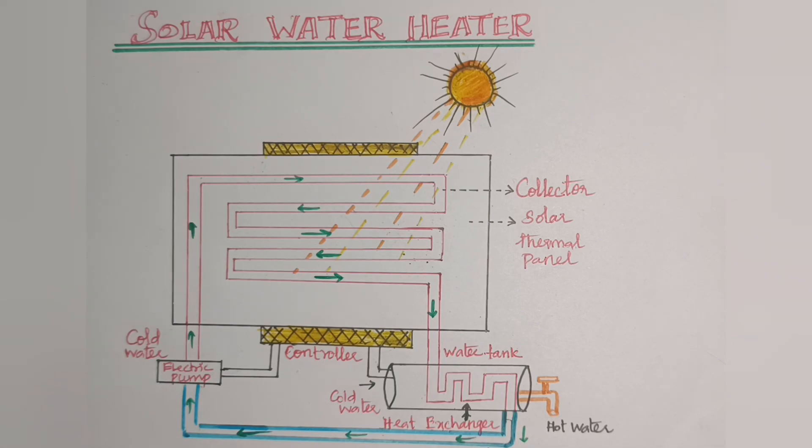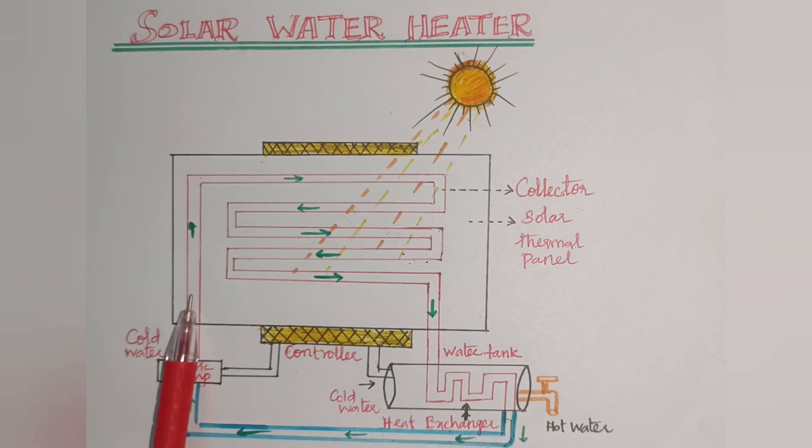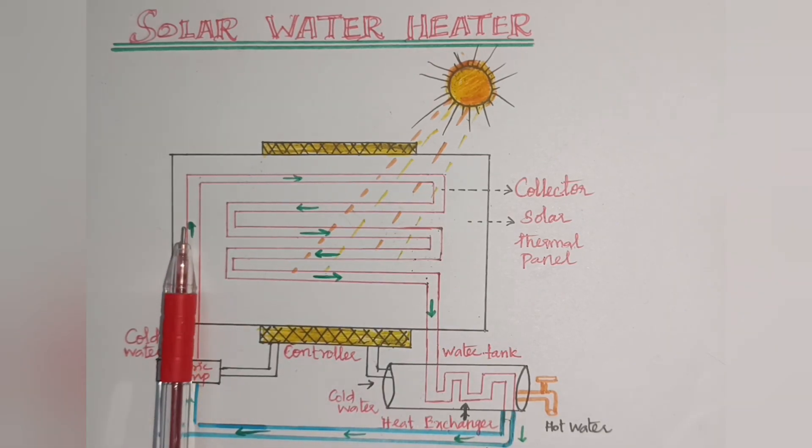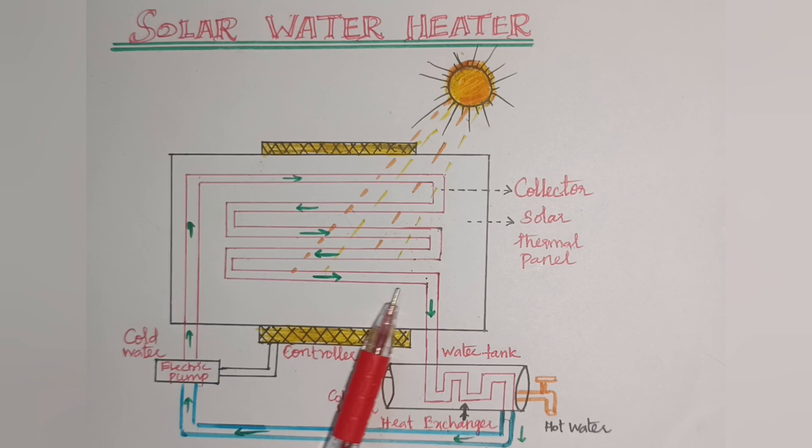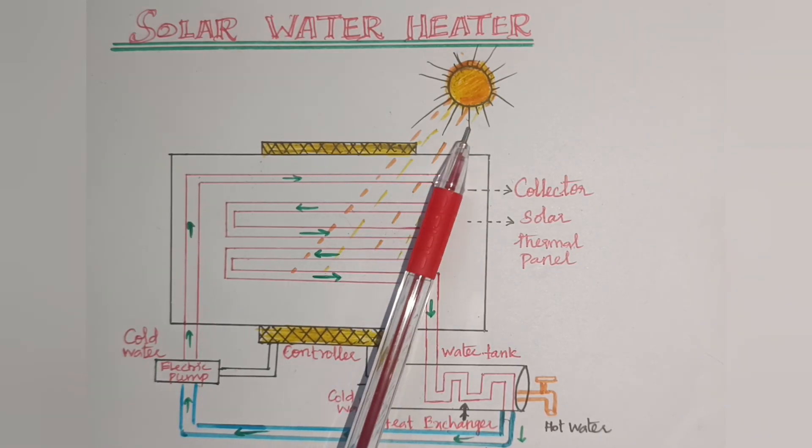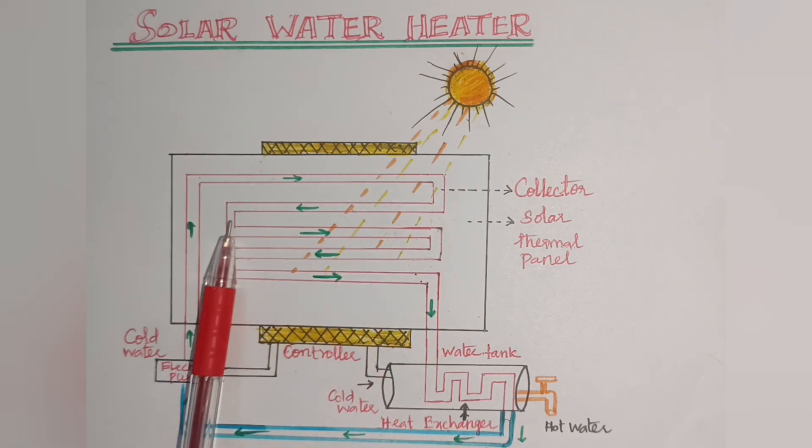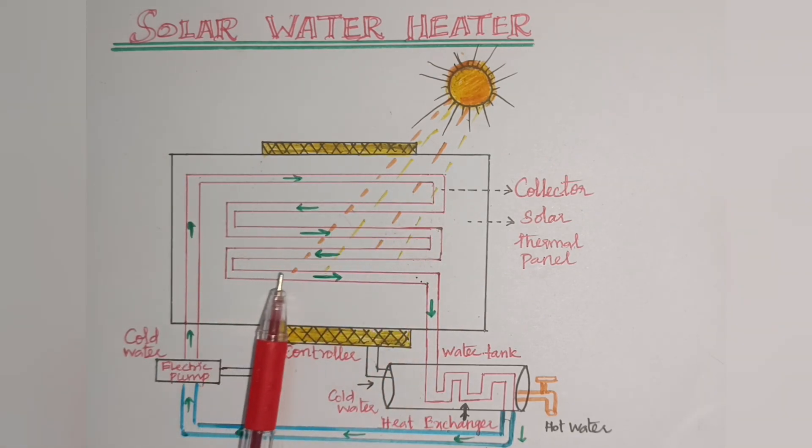Initially, with the help of electric pump, cold water is pumped into the collector rod. We need to supply cold water. Now thermal radiation falls on the collector, the solar thermal panel. This is the thermal panel.